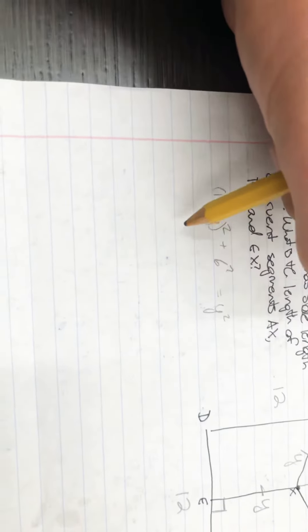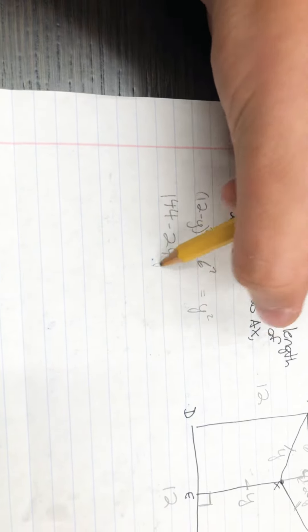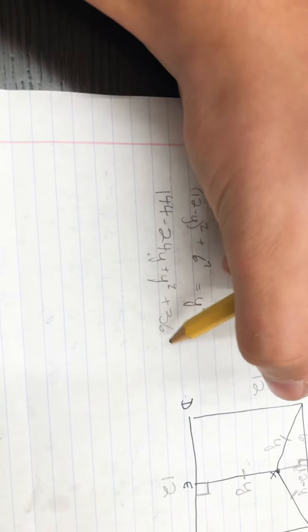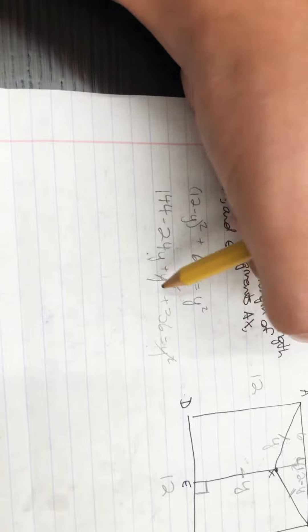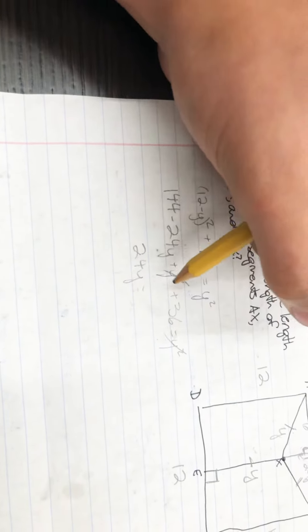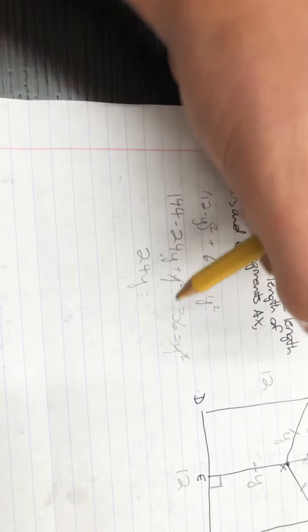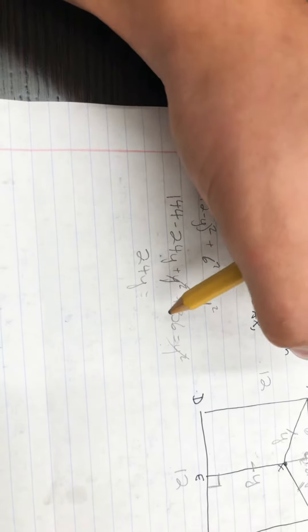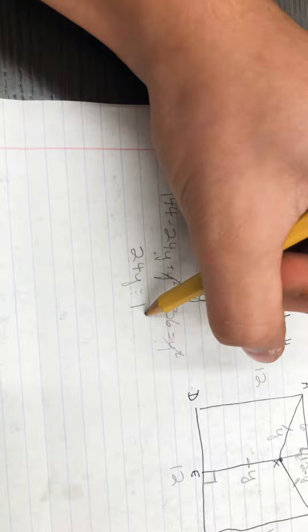Now we can go ahead and solve: 144 minus 24Y plus Y squared plus 36 equals Y squared. These two cancel out. I have 24Y equals 144 plus 36, which is 180.